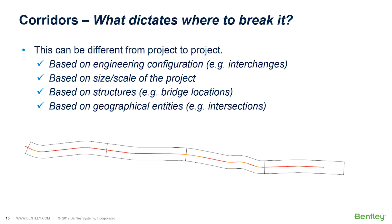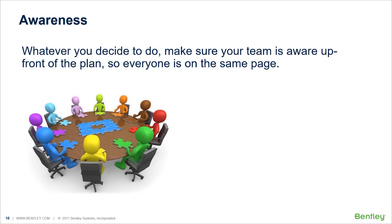What dictates where to break it up depends on the project. For example, if you have interchanges, you might break before, at, and after each interchange. It might be based on the size or scale of the project, on structures, or even on geographical entities such as intersections. There's no right or wrong answer, but having one corridor that's 25 miles long on a job is probably not your most efficient means of organizing data. Whatever you decide, make sure your team is aware up front of the plan so everyone is on the same page and understands why and how you're doing it.